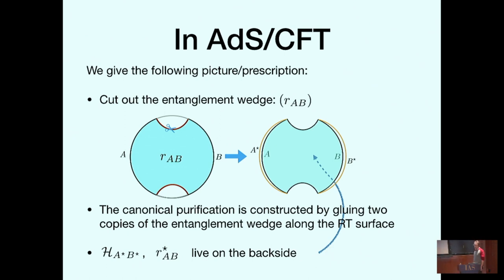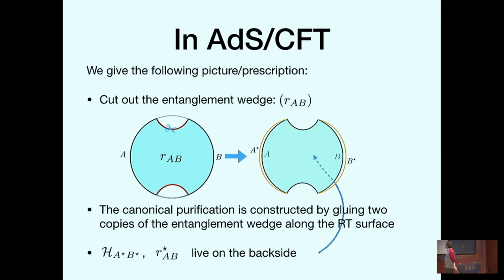In ADS-CFT, we ask how to calculate this quantity. We gave the following prescription: take the entanglement wedge — this blue region — cut it out, and take two copies of it. The other copy is like this starred version, like the double Hilbert space. You glue it together along the Ryu-Takayanagi surface, and that produces some new geometry. This new geometry is describing this square root rho state. In this construction, you have the Hilbert space of A and B on the boundaries, and the Hilbert space of A* B* on the backside.